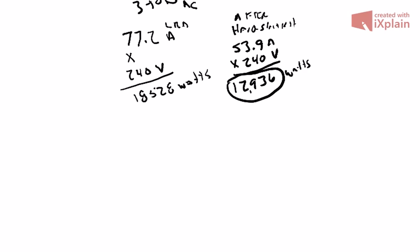Now, after the hard start kit, it reduced the lock rotor amps to 53.9. Now we want to times that by 240 volts. That gives us 12,936 watts. Now, the running watts is what is used once the air conditioner initially starts up and starts working. So that was 11.2 amps. And you times that by 240 volts. That gives us 2,688 watts.